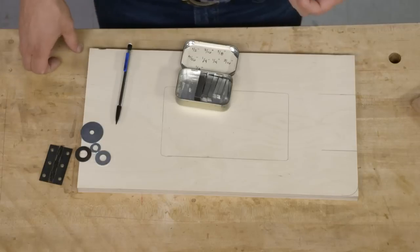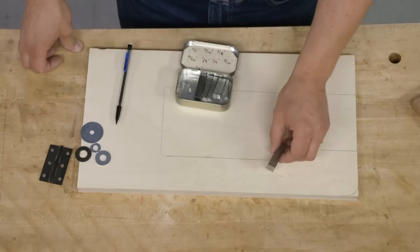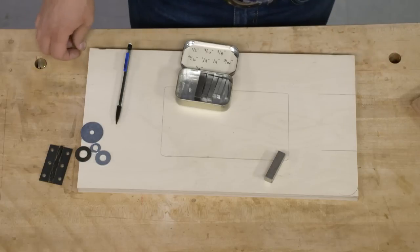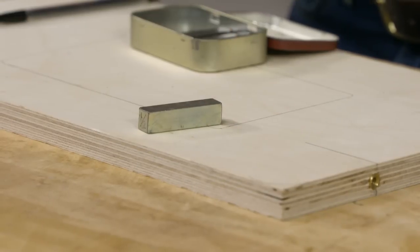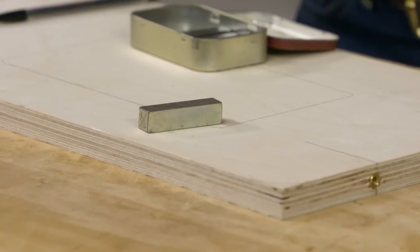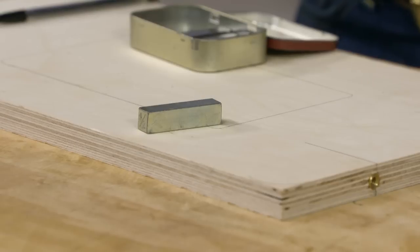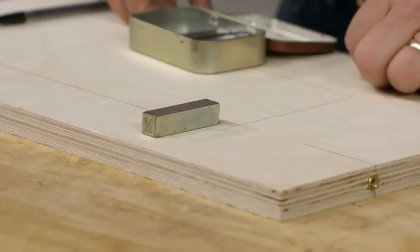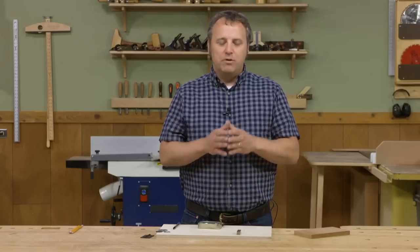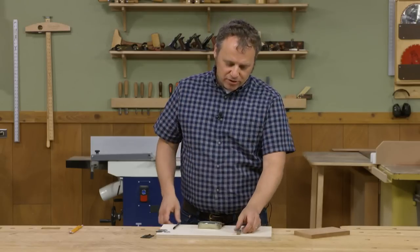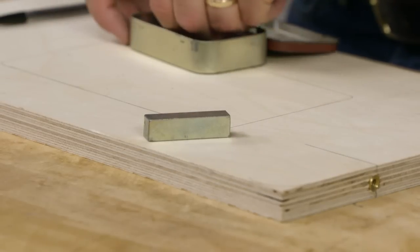But those sets can be really spendy, so the thrifty part of me went to the hardware store and found some key stock. The keys are used to hold a pulley onto a shaft. You can buy them in long lengths, but they also have them in much shorter pieces, and they're available in a wide variety of sizes.